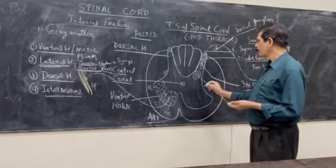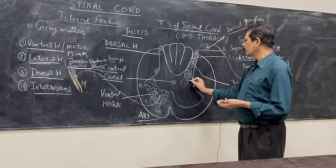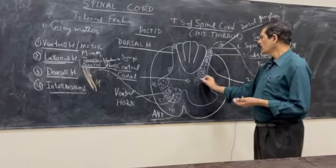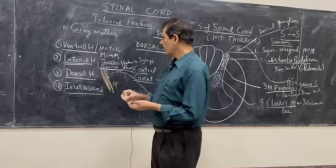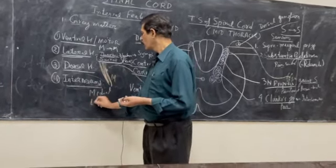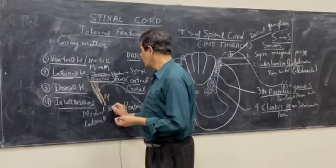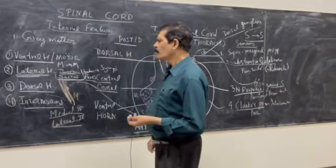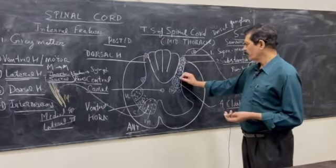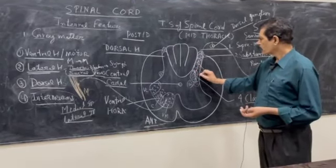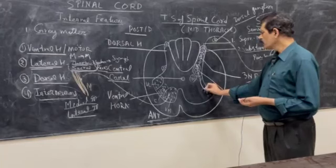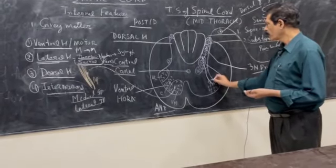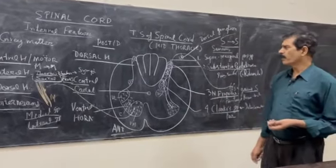Beside this, there are also medial and lateral groups of interneurons present — this is the fourth group, divided into medial and lateral parts. These interneurons have widespread connections both with the dorsal horn and the ventral horn. They are responsible for the various reflex arc systems of the spinal cord, which are very essential in some of the superficial and deep reflexes concerned in the human body.